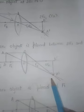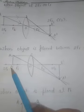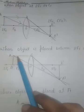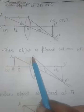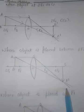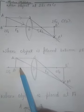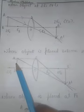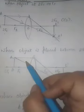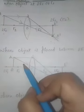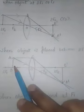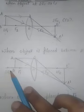When the object is placed between 2f1 and f1, according to rule one, a ray coming parallel to the principal axis passes through the focus on the other side of the lens. According to rule three, a ray passes through the optical center on the same path. The two rays meet beyond 2f2, and the image size is bigger than the size of the object.